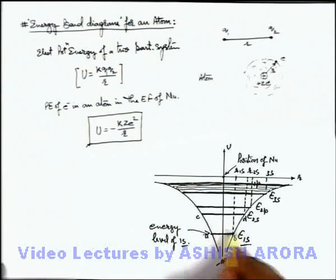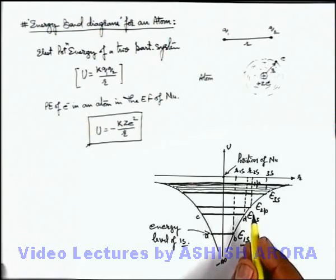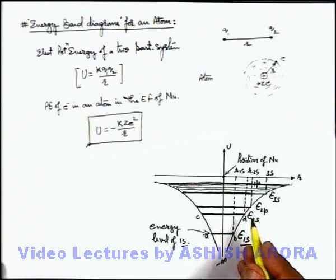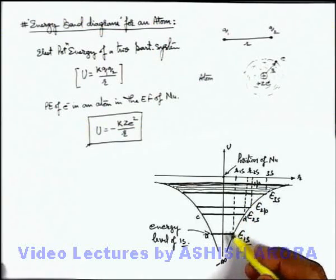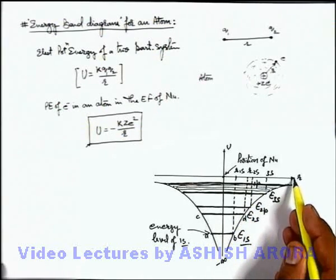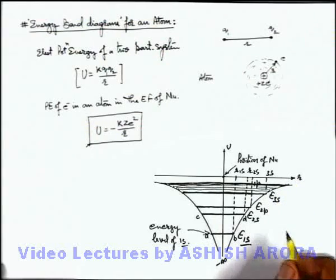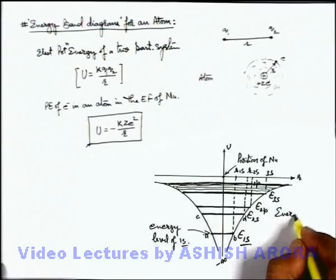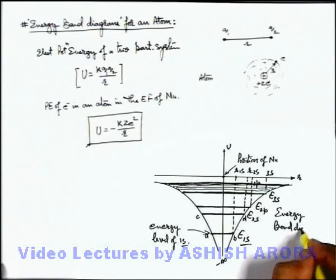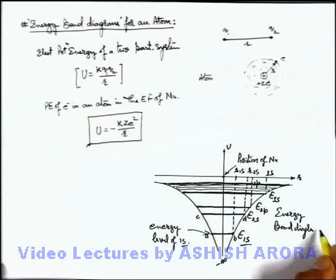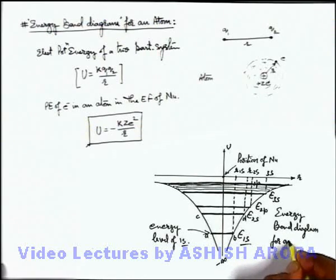We can say every line represents a specific energy level corresponding to an orbital in an atom. This diagram in which we are showing potential energy relationship with the distance of electron from nucleus, this is called energy band diagram for an atom.